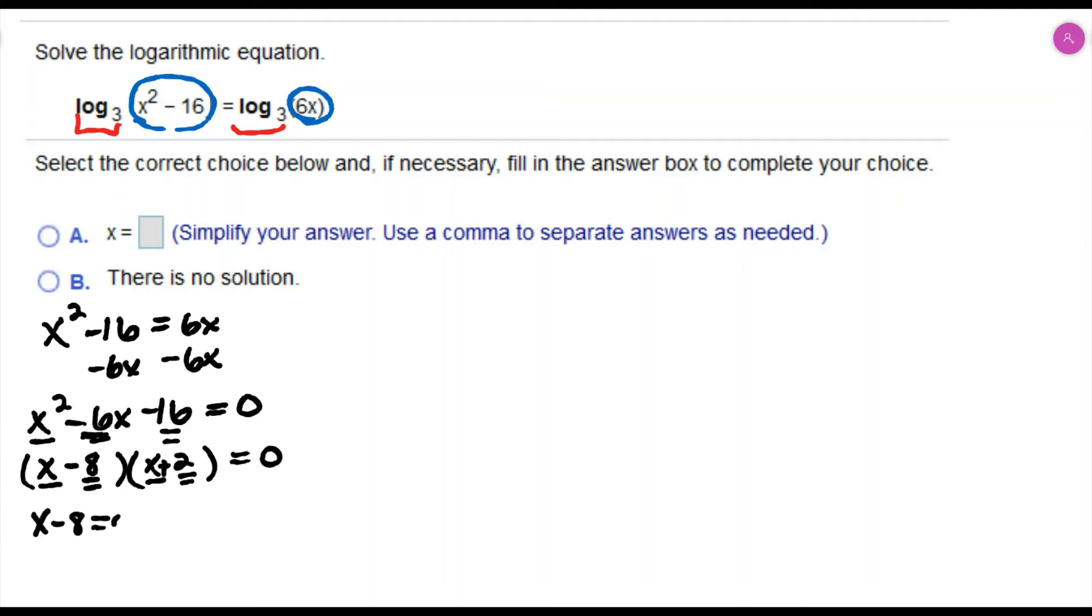Once I have it factored, I'm going to set each factor equal to 0, and that gives me x equals 8 and x equals negative 2. Once I get these answers, I need to check to make sure that we're not taking the log of a negative value or the log of 0.